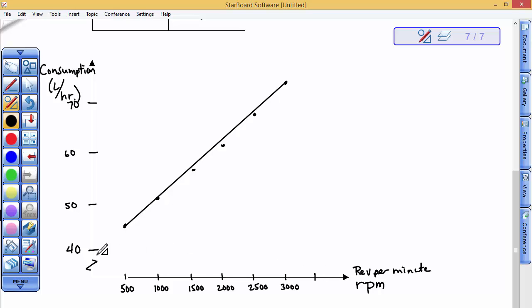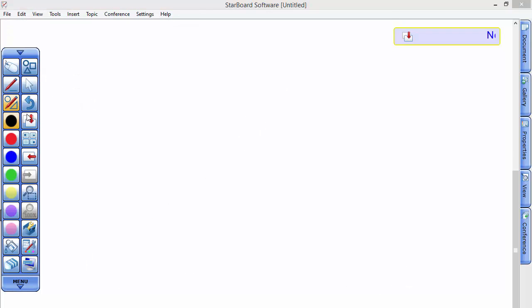I want to do another problem that we did earlier, and it was the braking distance. This was a few units, a few videos ago. The braking distance of a car was defined by 0.037 times its velocity squared.